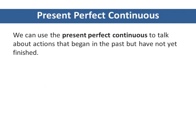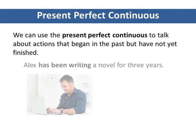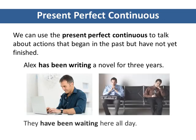Now we turn to the present perfect continuous. We can use the present perfect continuous to talk about actions that began in the past but have not yet finished. For example: Alex has been writing a novel for three years. They have been waiting here all day.